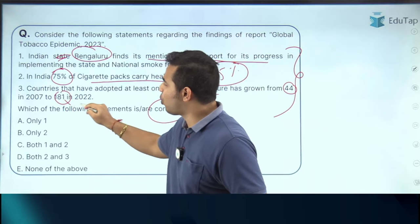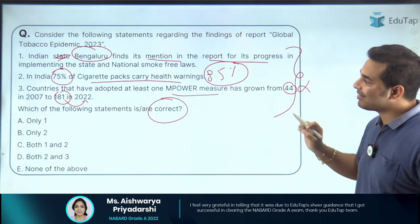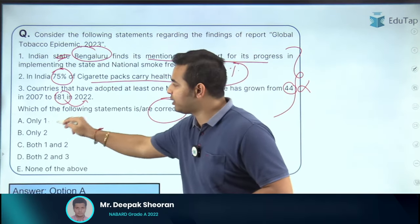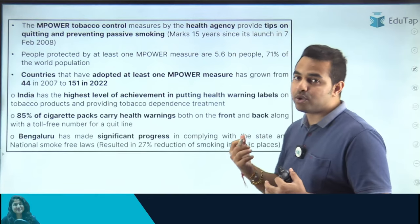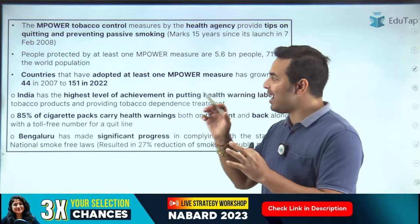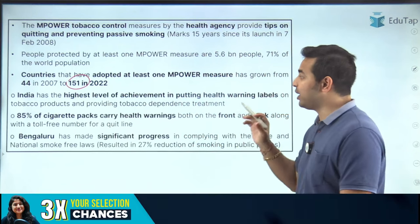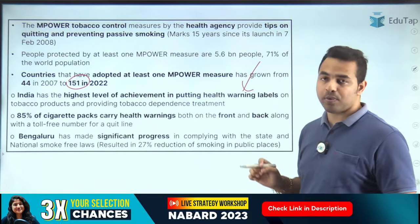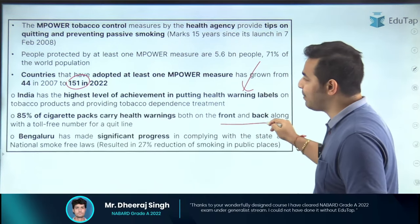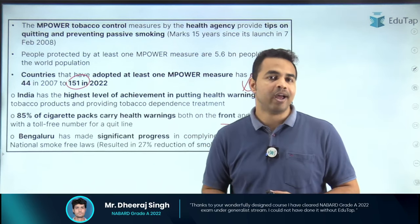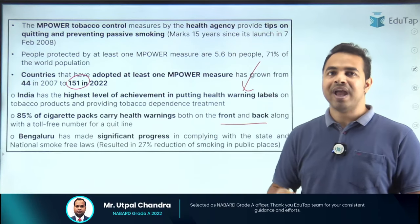Statement 3 says countries that have adopted at least one MPOWER measure have grown from 44 to 181 in 2022 — this is also incorrect. The correct number is 151 countries. Only Statement 1 is correct, so the right answer is option A. India has the highest level of achievement in putting health warning labels on tobacco products — 85% of cigarette packs carry health warnings on both front and back, along with a toll-free quit line number.